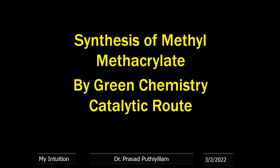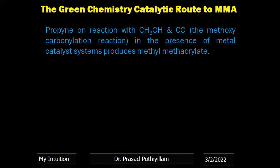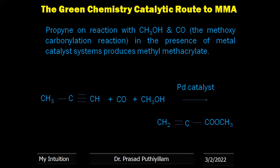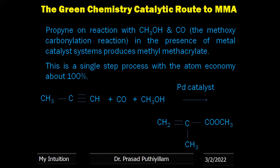In the green chemistry or catalytic route for methyl methacrylate, propyne (CH₃C≡CH) is used as the starting material. It reacts with carbon monoxide and methanol in a methoxycarbonylation reaction, in presence of a palladium catalyst, to give methyl methacrylate (CH₂=C(CH₃)COOCH₃) in a single step. This route also gives 100% atom economy — there is no wastage of chemicals, only one product is obtained, and 100% yield conversion can be expected.